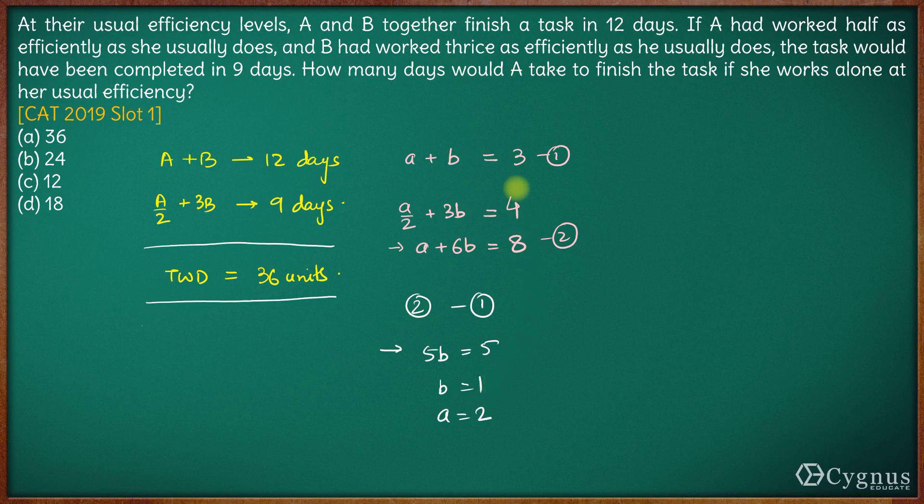Now the question is time taken by A alone. So time taken by A alone is total work to be done which is 36 units divided by efficiency of A which is 2 units. So A alone will take 18 days to complete the whole work.